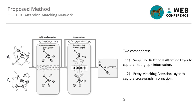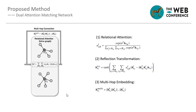To address these challenges, we propose the Dual Attention Matching Network. This network is composed of two major components: one is a simplified relational attention layer to capture intra-graph information, and the other is a proxy matching attention layer to capture cross-graph information. The simplified relational attention layer captures relational information within each knowledge graph by generating relation-specific embeddings through relational attention and relational reflection transformation, and then stacks the outputs from each layer together to create a more global-aware representation.